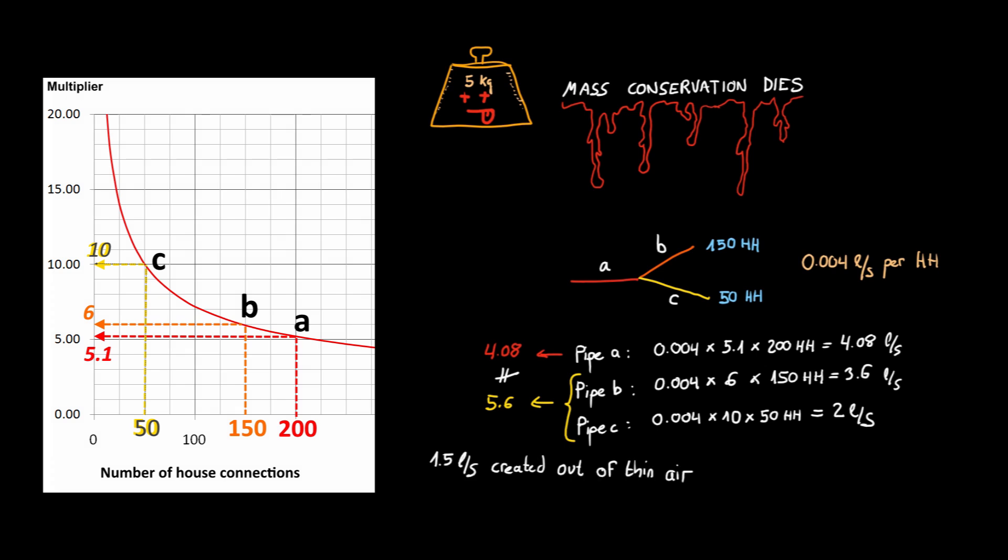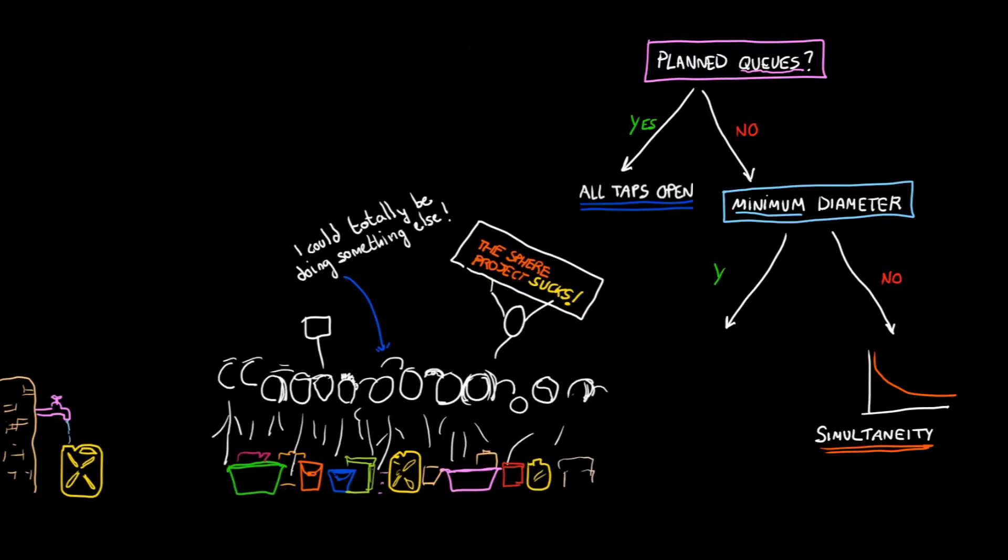The solution is to install a minimum diameter and move on to a time-varying approach. Those pipes with less house connections are covered by the minimum diameter. For the rest, we measure or plot how water is consumed throughout the day.